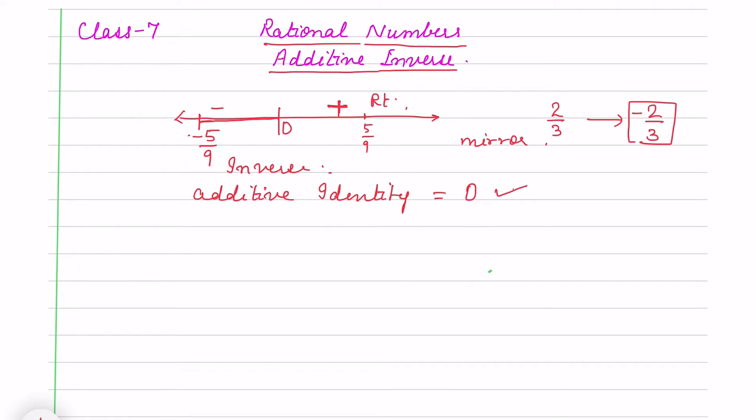0 is called additive identity. Why? Because if I add 0 to any number, that same number will come—the identical number will come when I add 0. That means any number when you add 0, the identical number is coming. So 0 is called additive identity.